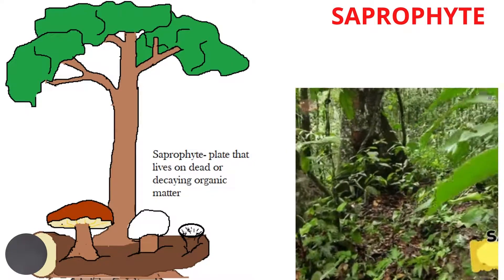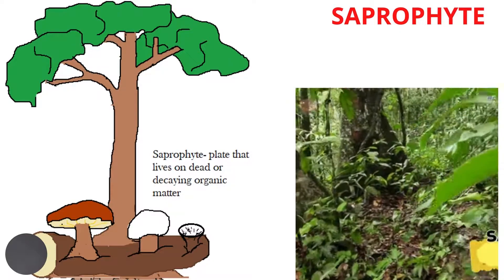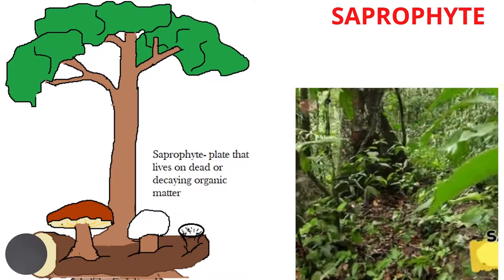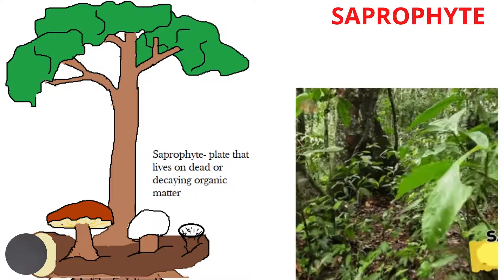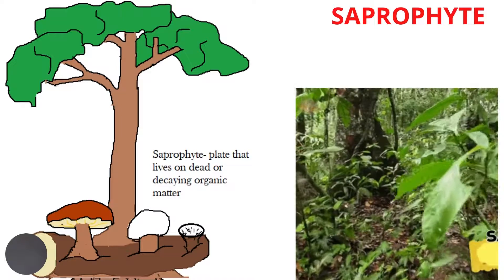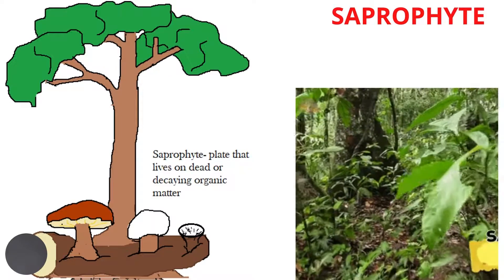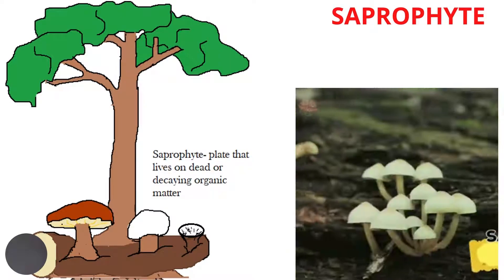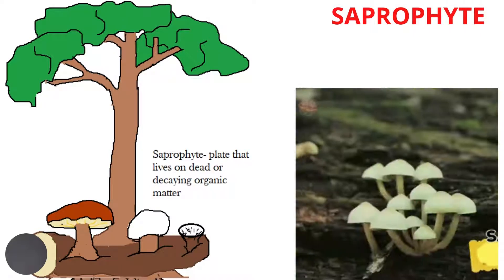Saprophytes are plants that live on dead and decaying organic matter, like decaying tree stumps for example. The saprophyte releases enzymes on the decaying matter, which converts the organic matter into a liquid that the saprophyte can then absorb to obtain its nutrients.